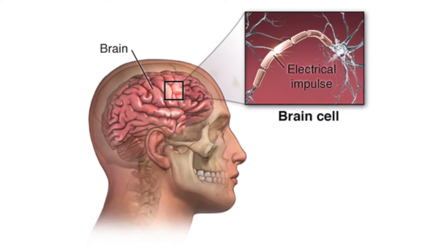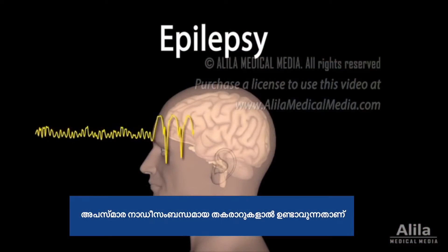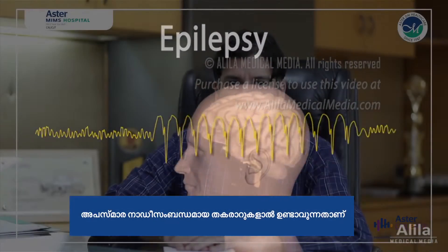In simple terms, what happens in a seizure is like a short circuitry happening in the brain. Normally, the nerve cells keep firing, but when there is a sudden short circuit resulting in abnormal firing of these nerve cells, it causes the brain to dysfunction and the patient can have seizure symptoms, which can be of varying types.